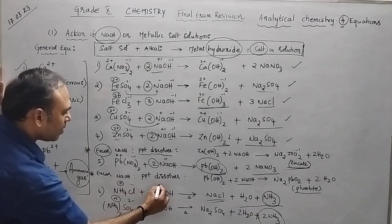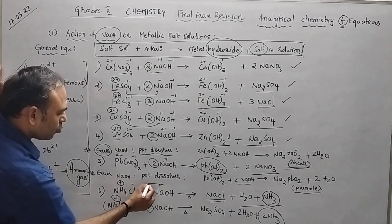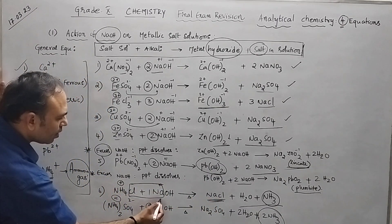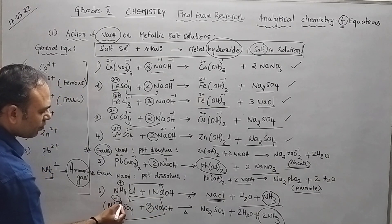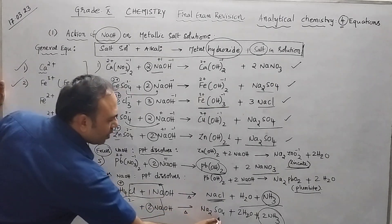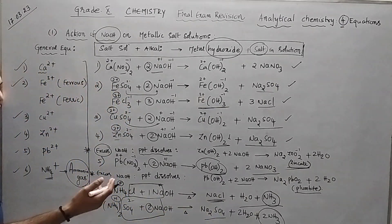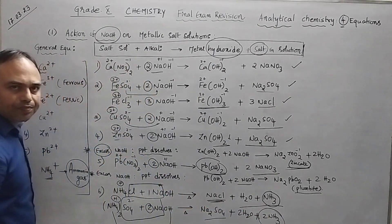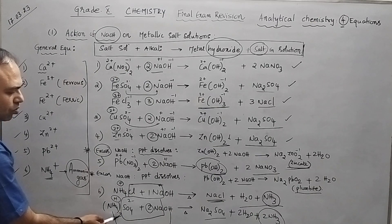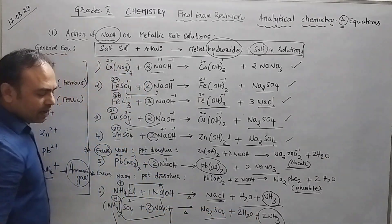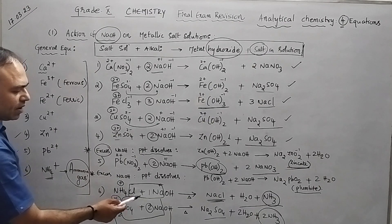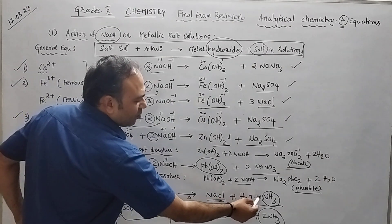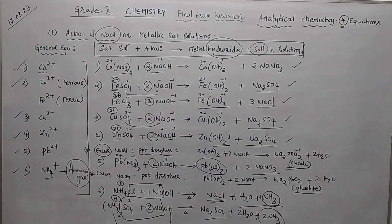Na⁺ and Cl⁻ combine to give NaCl as the salt. For the sulfate case, 2Na⁺ and SO₄²⁻ combine to give Na₂SO₄. What is left over gives water plus ammonia. With 2 moles, you get 2 water and 2 NH₃. With 1 mole of ammonium, you get 1 water and 1 NH₃. Very simple to understand.